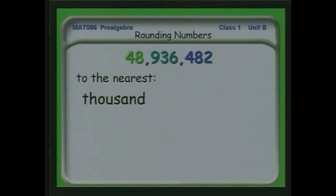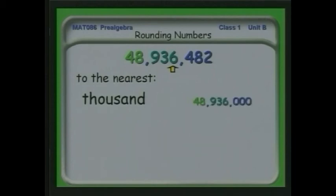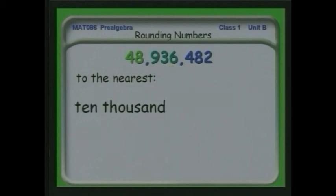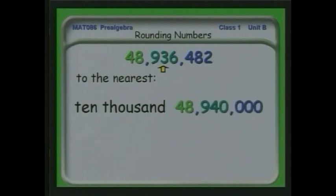Let's round to the nearest 1,000: put the marker on the 1,000, then look to the right and see 482. Since 482 is less than 500 — less than halfway — we round down, keep the 6, and fill in to the right with zeros. How about rounding to the nearest 10,000? We put a marker on the 3, look to the right, and immediately see 6,482. Since 6 is greater than 5, we round up, giving us 48,940,000.